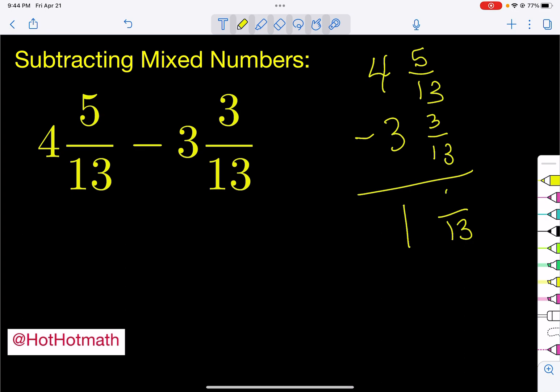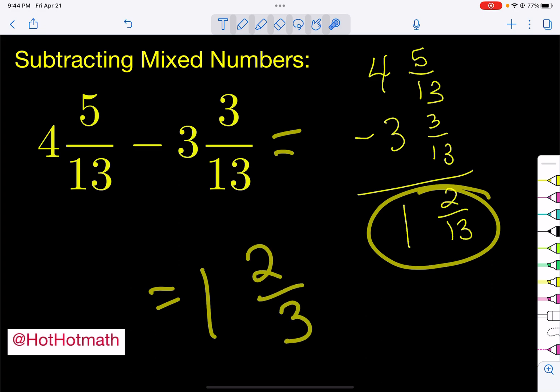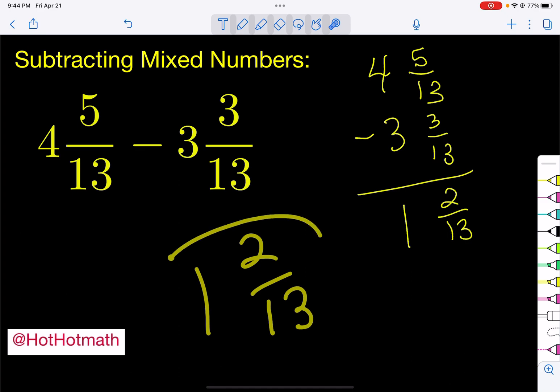Now there's some things you should check. Does 2 and 13 have any numbers in common that we can reduce? It does not. This number is smaller than that number. So that is our final answer. 1 and 2 thirteenths is our answer. So that is how you subtract mixed numbers if you don't have to borrow and if your denominators match.